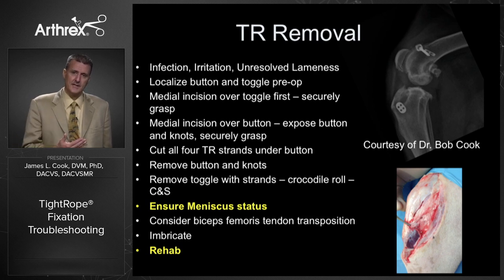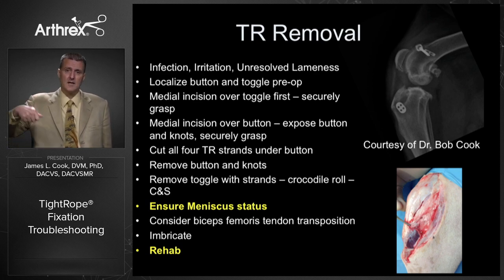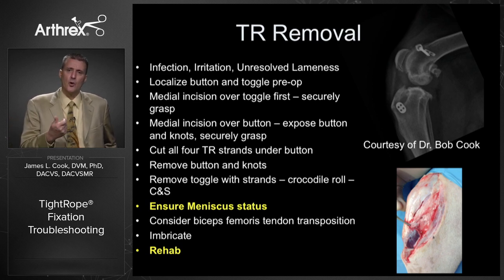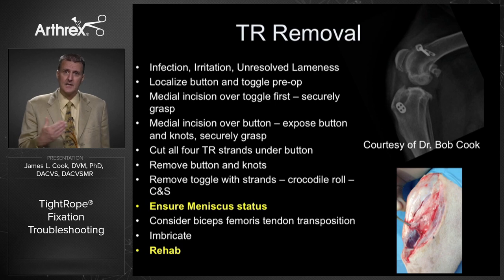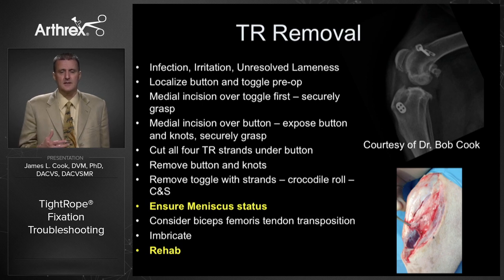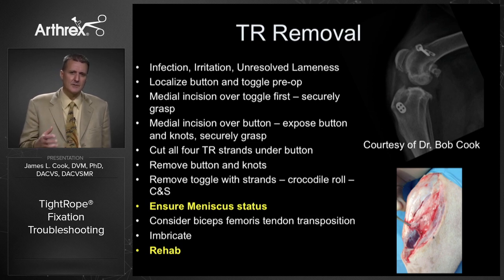Securely grasp those, cut all four strands of the fiber tape underneath the button, pull out the button and all the knots, and then go back to the toggle and pull everything out. One little trick — especially for a more chronic case with a lot of interdigitating fibrous tissue — is the 'crocodile roll': instead of trying to pull and yank it out, roll the fiber tape over your needle driver or instrument, which gives you leverage and incrementally brings it out like a winch system. That works very effectively. Make sure you get it all out, and it is mandatory to culture that implant even if it's not infection — to make sure there's nothing underlying, so you can use the most effective antibiotics if needed.